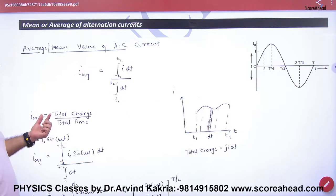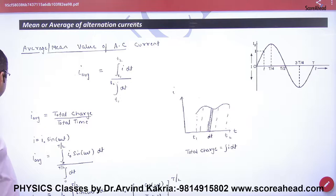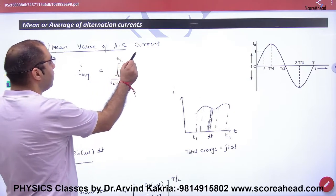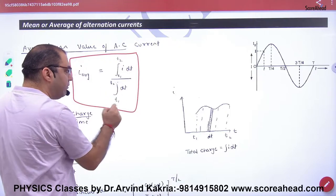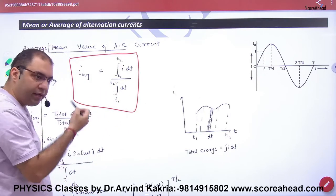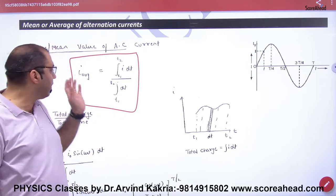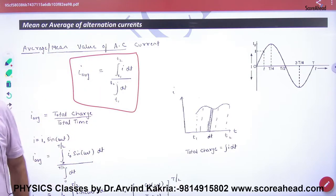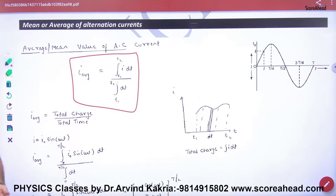So average current is calculated. Average current formula: total charge upon total time. Integration i dt from T1 to T2, upon total time T2 minus T1. So total charge by total time, what will it be? Average current. Please put this formula in box. So now you will always use this formula to calculate average current.